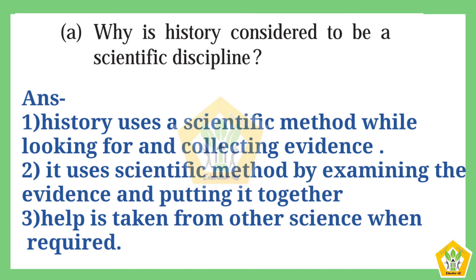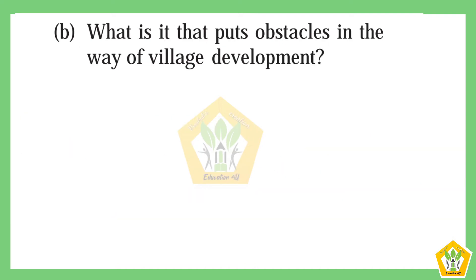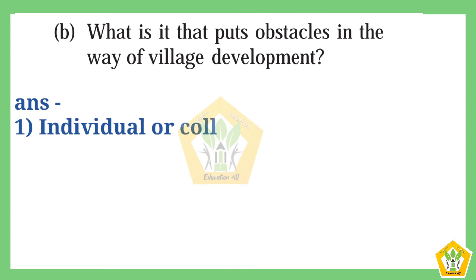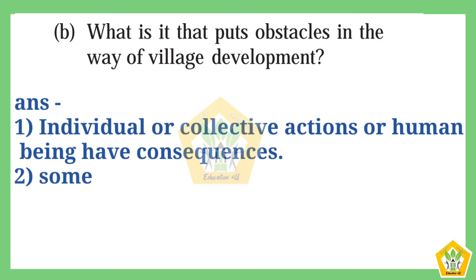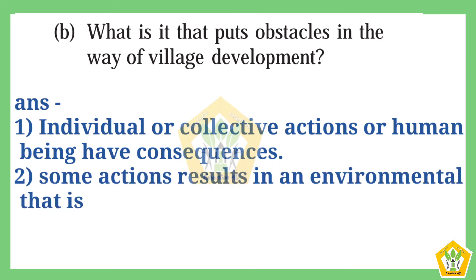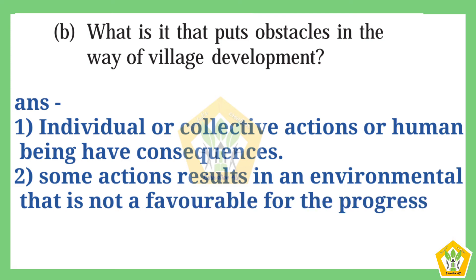Question (b): What is it that puts obstacles in the way of village development? The answer is: First, individual or collective actions of human beings have consequences. Second, some actions result in an environment that is not favorable for the progress of society.